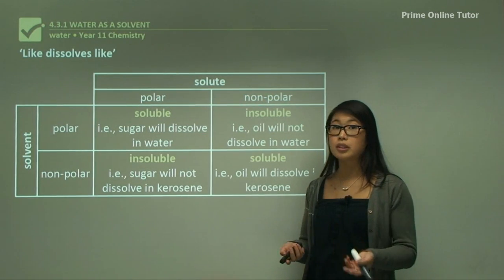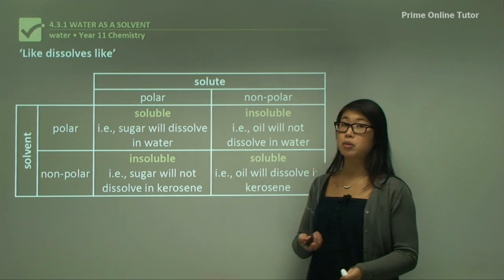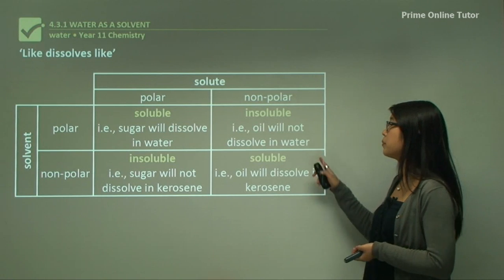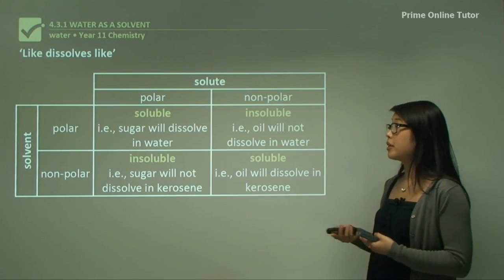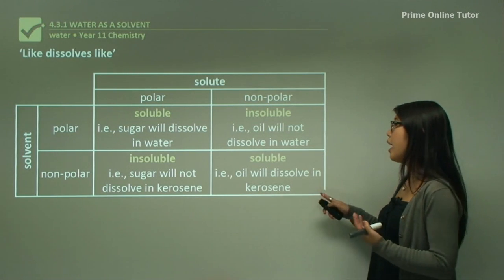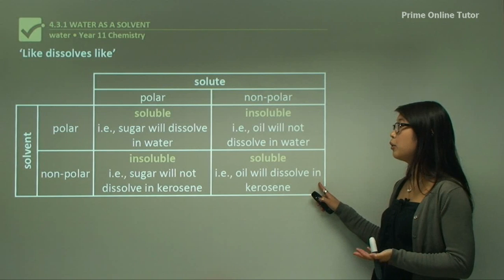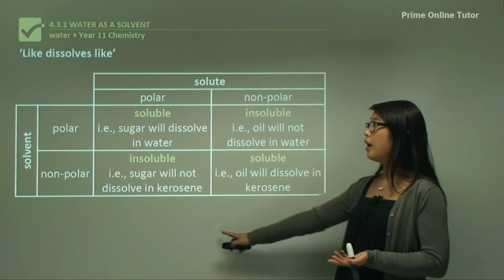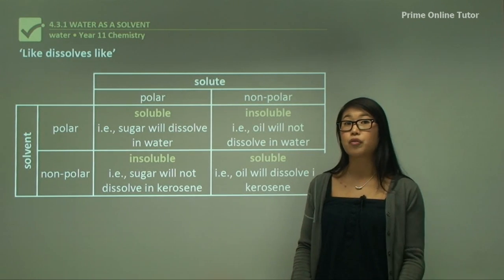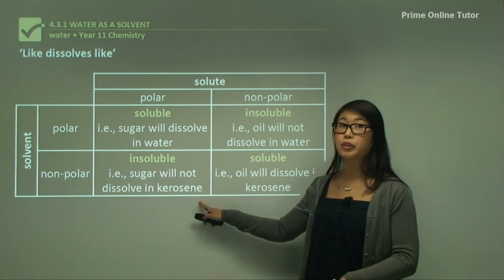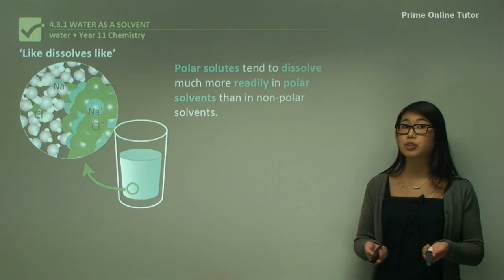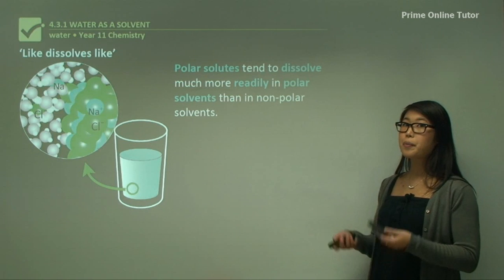Sugar is a polar molecule and it dissolves in water, another polar molecule. But oil, which is nonpolar, does not dissolve in water which is polar — they're insoluble. Oil and kerosene, both nonpolar, do mix and are soluble. Sugar, a polar molecule, does not dissolve in kerosene, a nonpolar solvent.